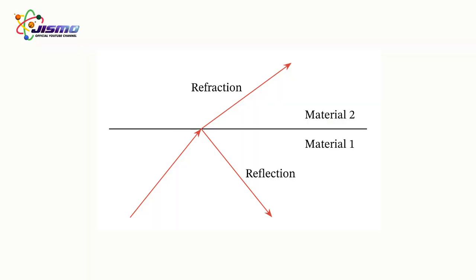So total internal reflection is when light waves or sound waves are completely reflected. In this case, the light waves cannot pass through and are reflected back to the original medium, and at this angle the image cannot be viewed. To check more about the theory of total internal reflection, please check out the previous episode in the link down below.